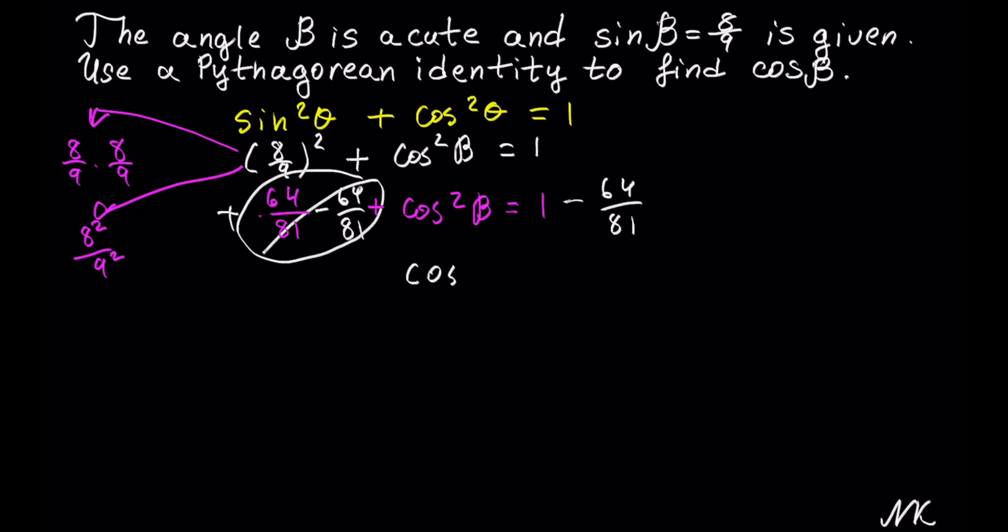And we get cos² β = 1 - 64/81. We need to combine fractions, and 1 is a whole number. Whole numbers are always out of 1. The least common denominator is 81.